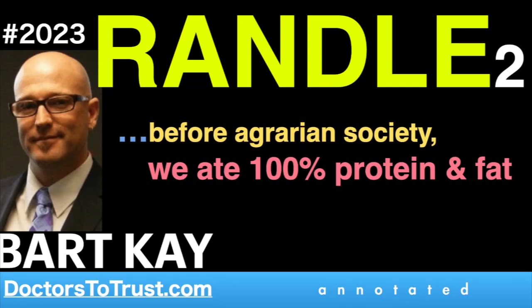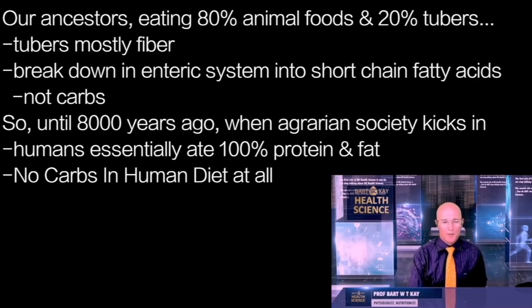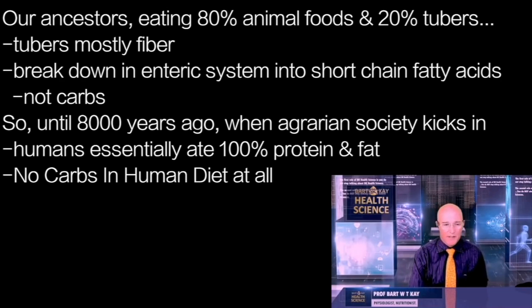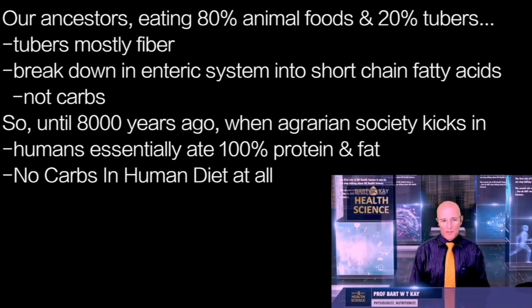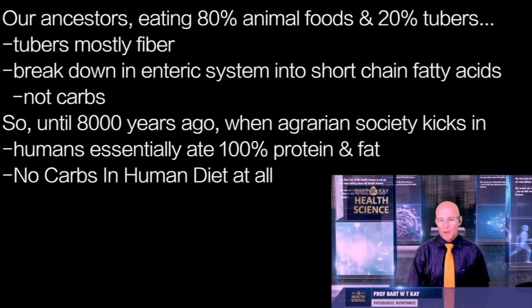This was basically fiber — what these people were eating. As you know, fiber breaks down in the enteric system only under the influence of bacteria that break it down a little bit. What they produce for us is short chain fatty acids, not carbohydrates. So basically, the human diet for 350,000 years up to the agrarian revolution about 8,000 years ago was, to all intents and purposes, 100% protein and fat — given that the fiber broke down to short chain fatty acids and not carbohydrates, there was no carbohydrate in the human diet at all. None. Zero.